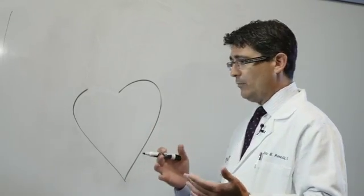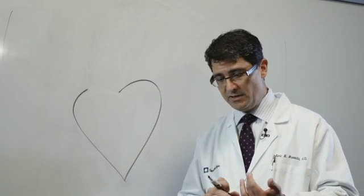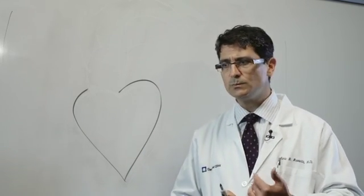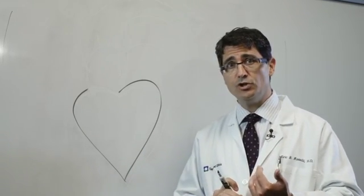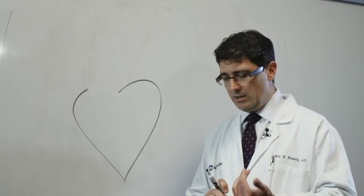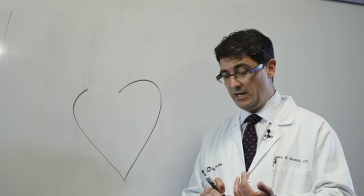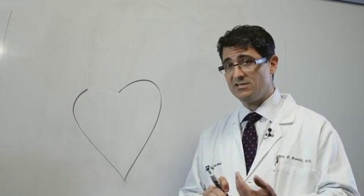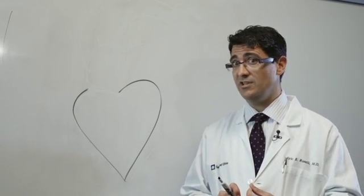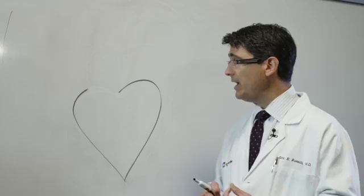A lot of times people think that they have the aneurysm because the valve is not functioning well, but that's not necessarily true. We know that because we see that people will have an aneurysm of the ascending aorta whether the bicuspid valve leaks, the bicuspid valve is stenotic, or the bicuspid valve is functioning just fine at about the same rate.